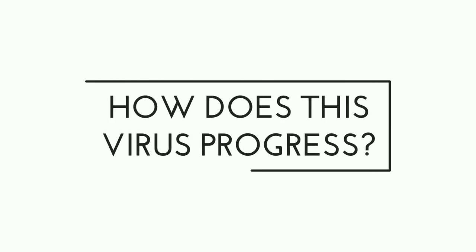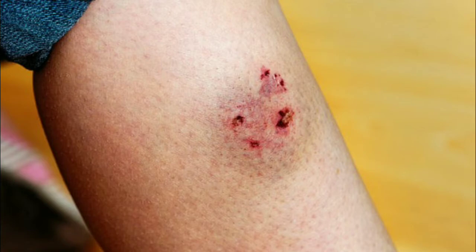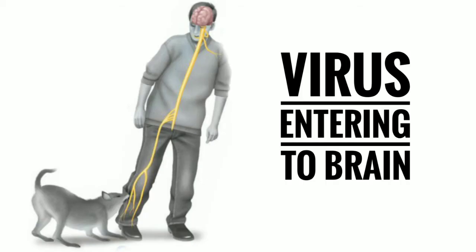So how does this virus progress? After the bite from an infected animal, the rabies virus begins replicating in the striated muscle cells at the bite site. This rabies virus spreads along the nerve pathways to the spinal cord and finally reaches the brain, where it starts to replicate again, producing various dangerous signs and symptoms.